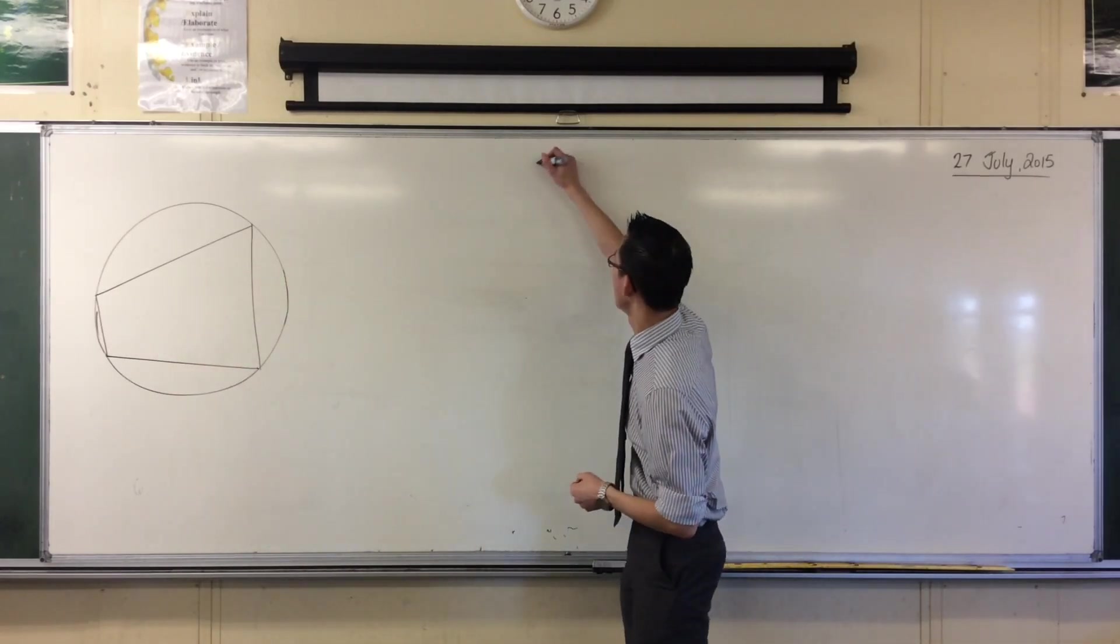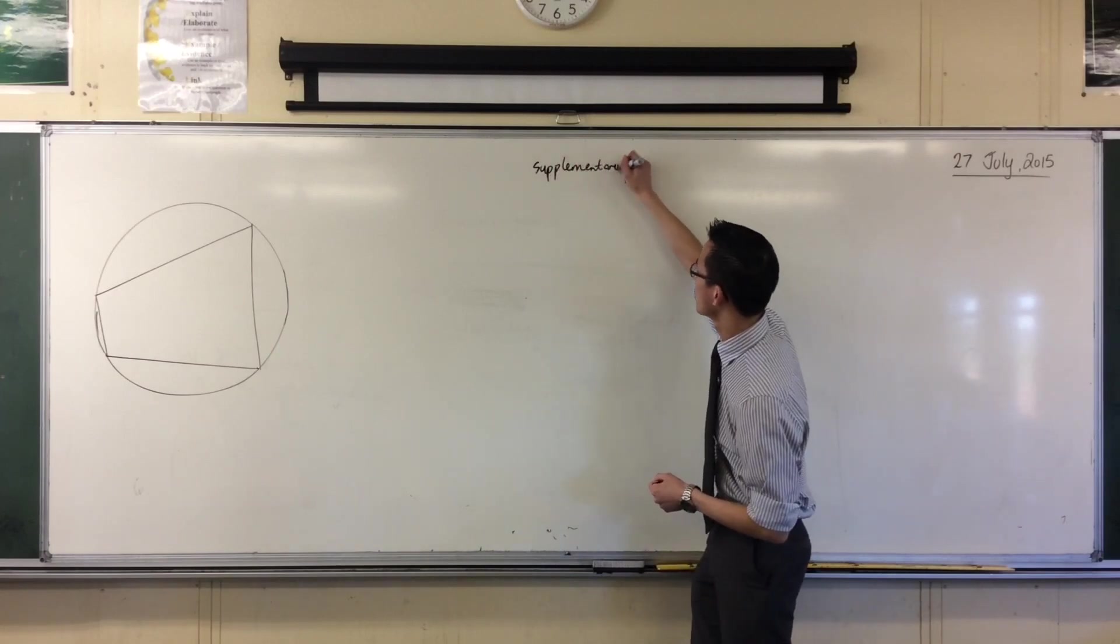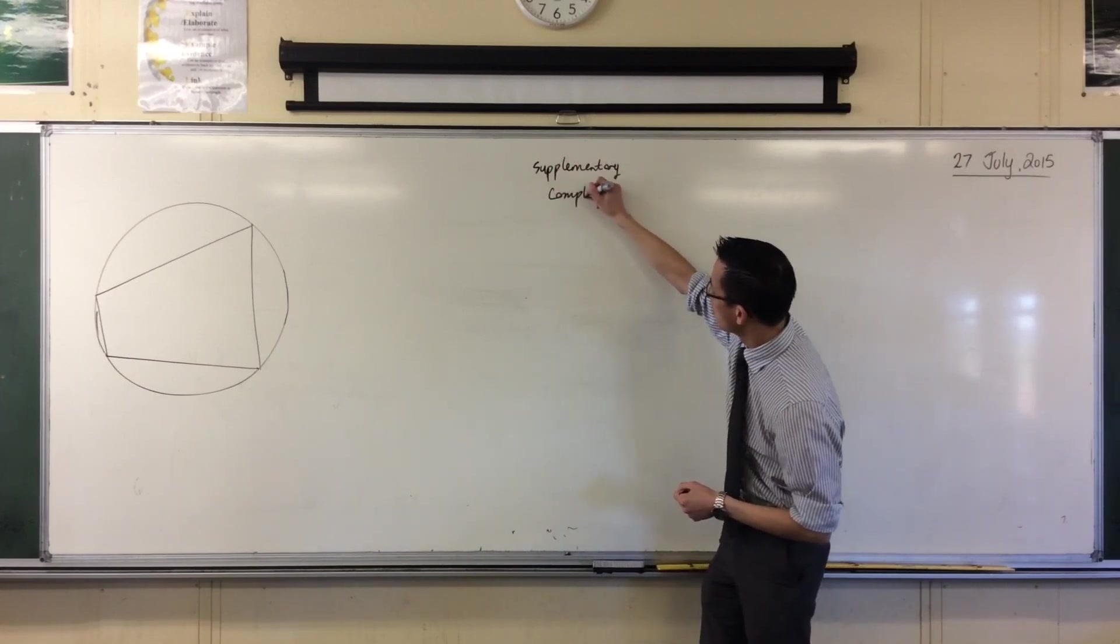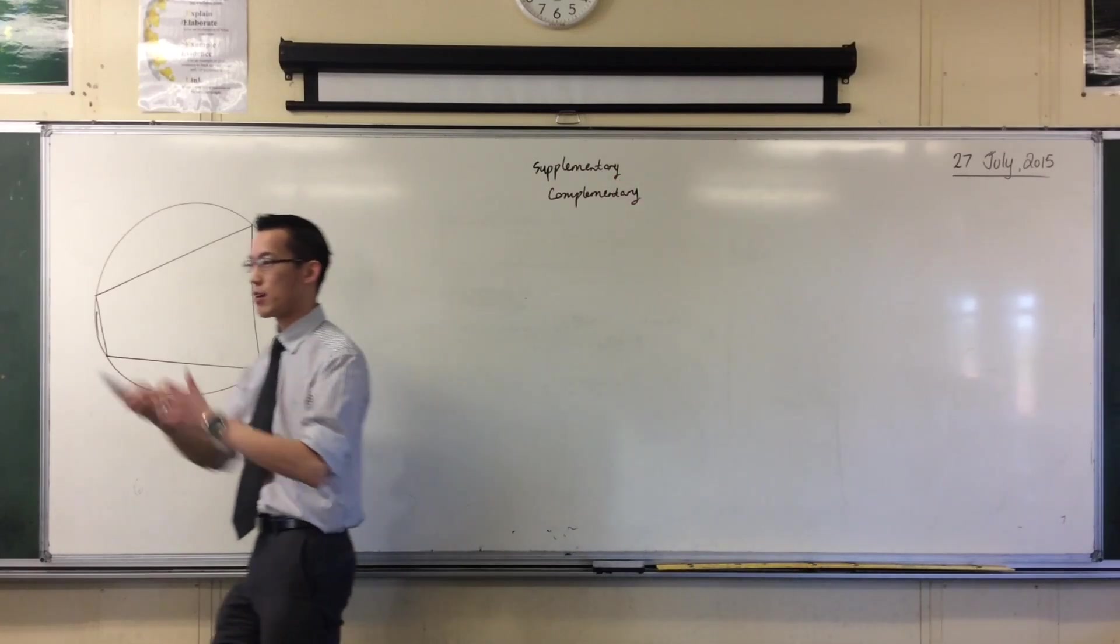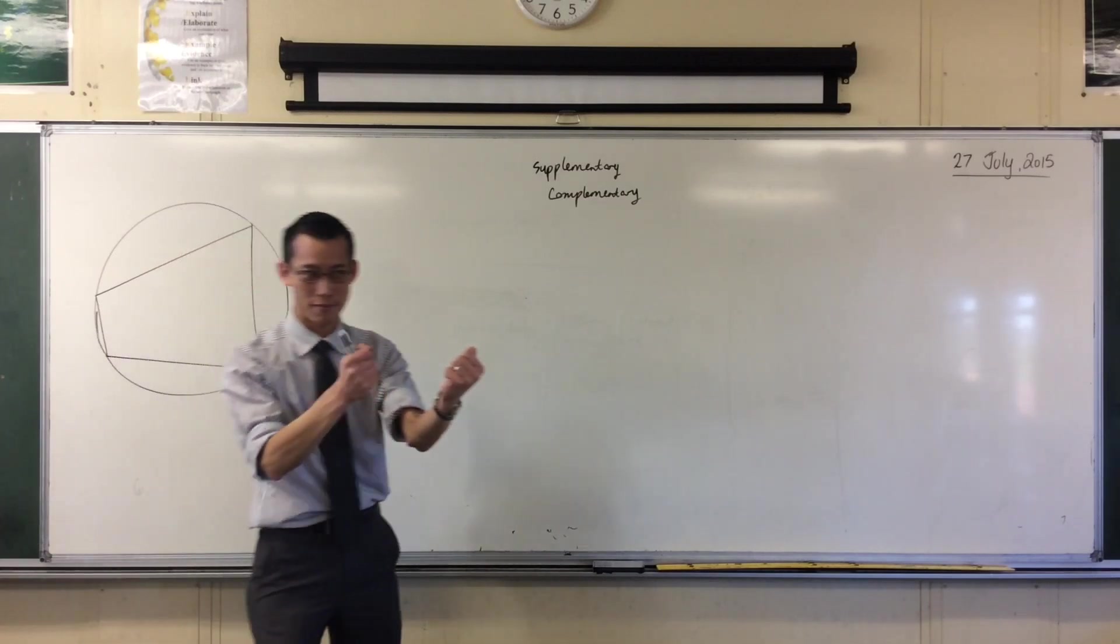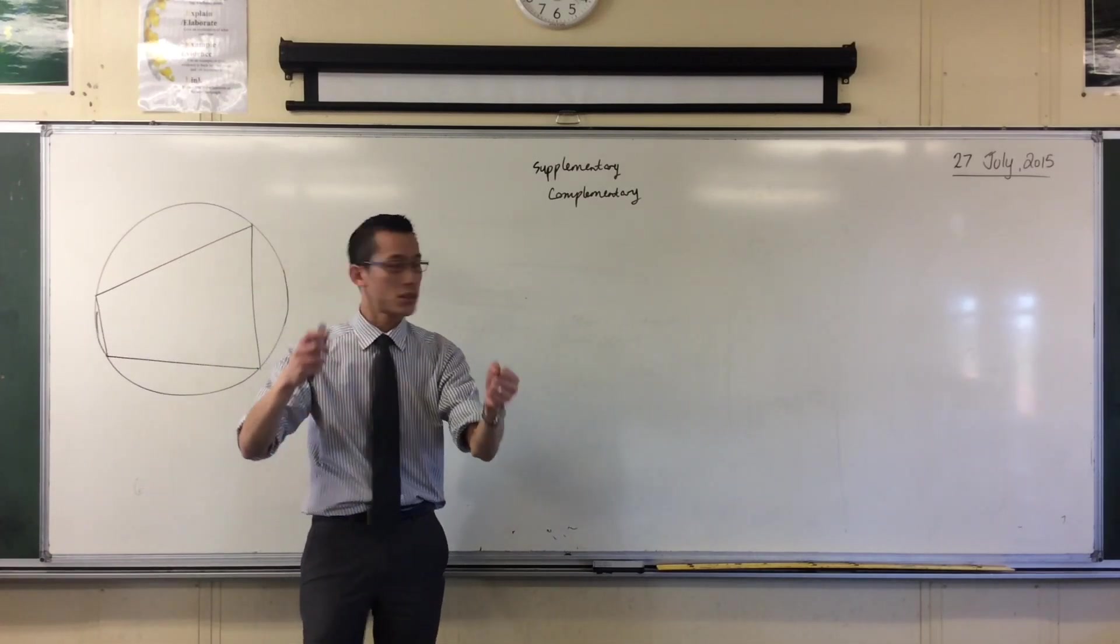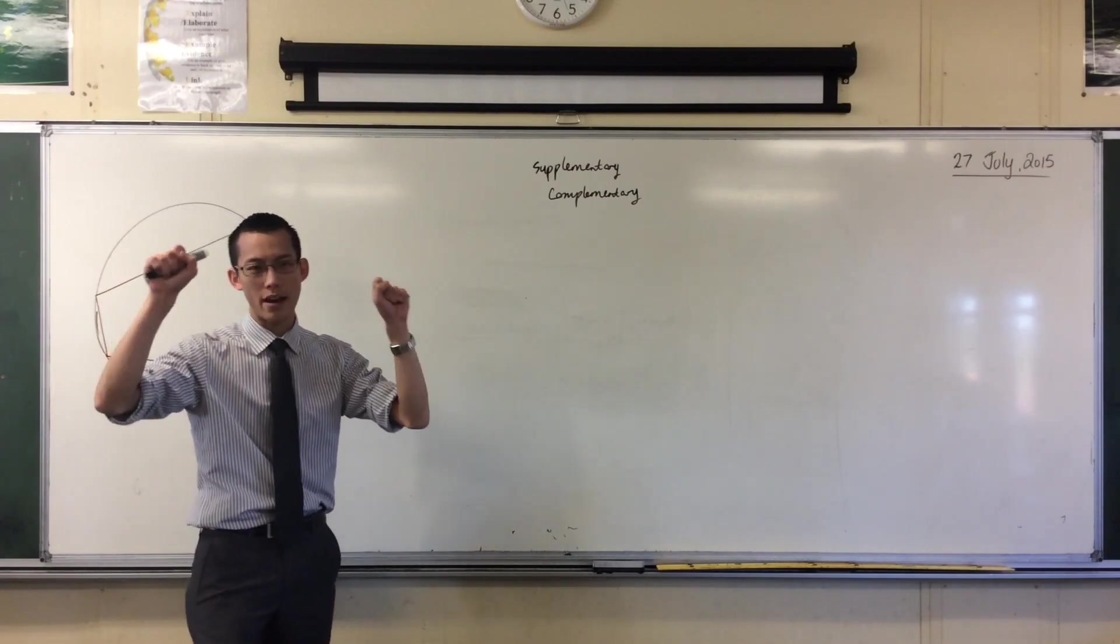Just a quick note on the word supplementary. Just like the word complementary, this is more of a language thing than anything else. Each one implies that there are two objects, right? You've got one thing and its supplement, or you have another thing and its complement. So when you talk about supplementary angles or complementary angles, you're always talking about a pair.